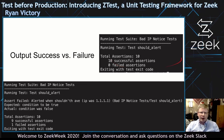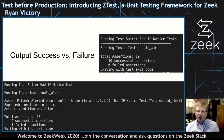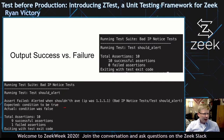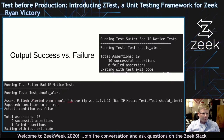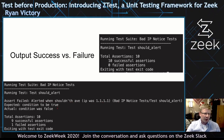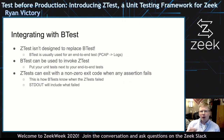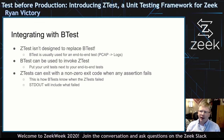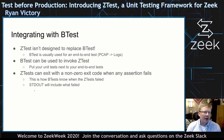On a successful run, we can see 10 successful assertions. If I go into the code and remove the false positive check, assert failed — 'alerted when shouldn't have, IP was 1.1.1.1.' We expected the condition to be true; it was actually false, and we have failed. If I integrate this into Btest, that will cause Zeek to have a non-zero exit code, Btest will fail, and the standard output will include that nice message telling me exactly which test has failed. ZTest is designed to be invoked via Btest or outside of it, depending on your workflow.